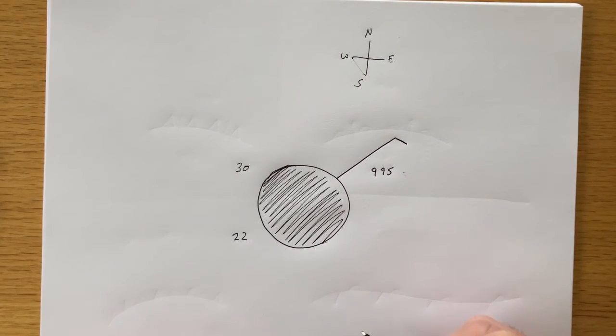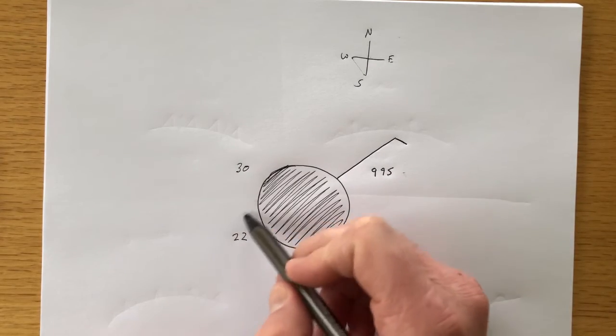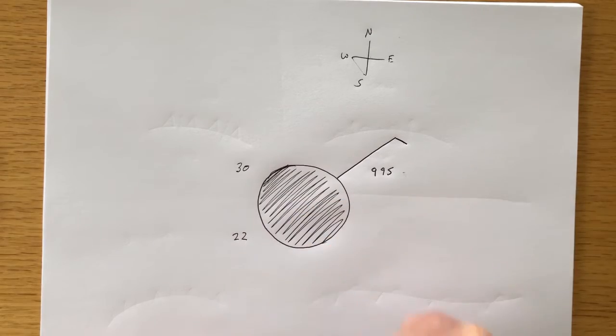And last but not least, if there was anything happening today like rain, snow, fog, whatever, that always goes in this area here between the temperature and the dew point. So, let's just pretend it's foggy right now.